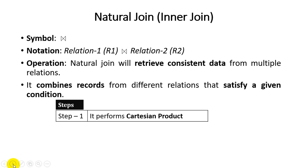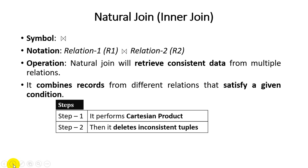The first step is to perform the Cartesian product. If you have any doubt about Cartesian product, please go through my previous video. After generating the Cartesian product result, step two is known as deleting inconsistent tuples. In a Cartesian product we do not remove any inconsistent records — duplicate records remain in the output — but in natural join, inconsistent tuples are deleted.